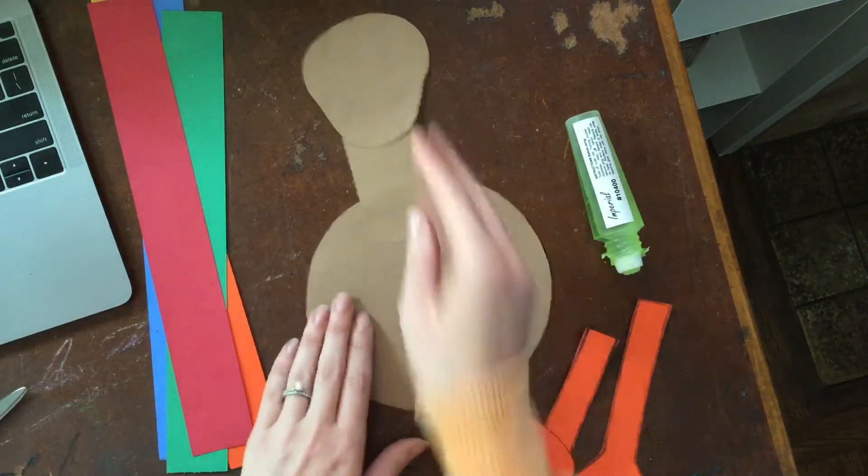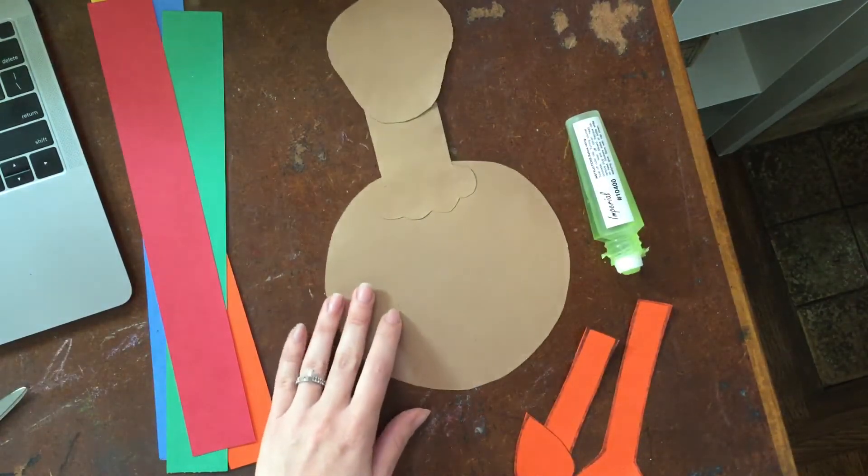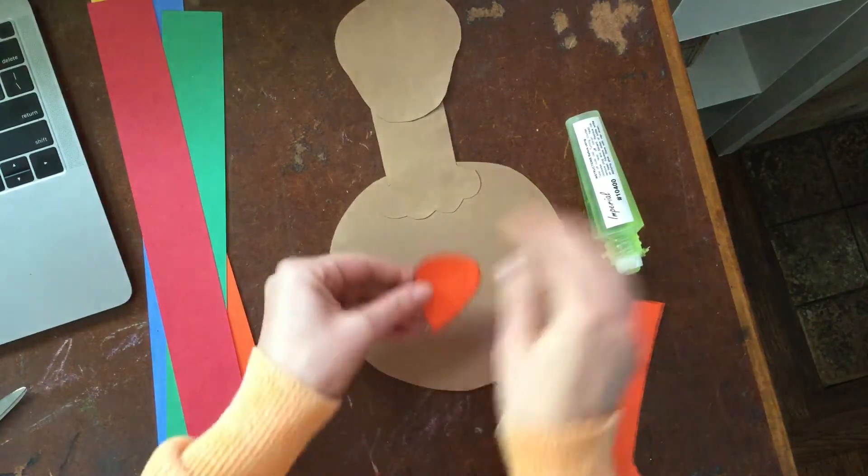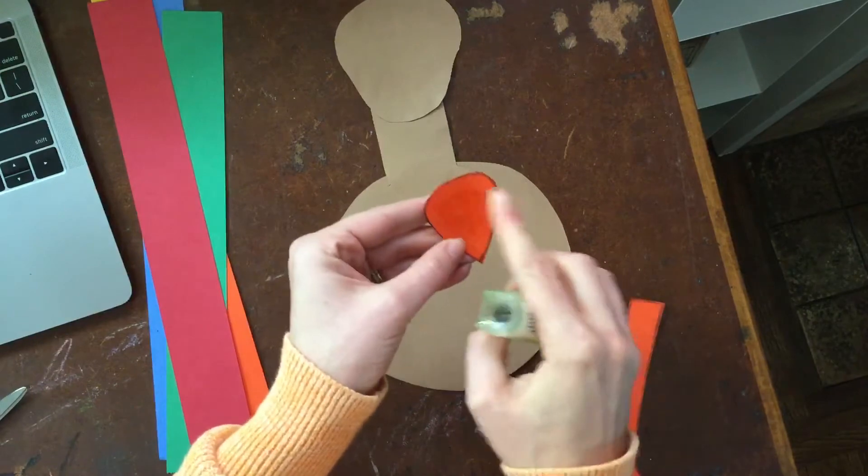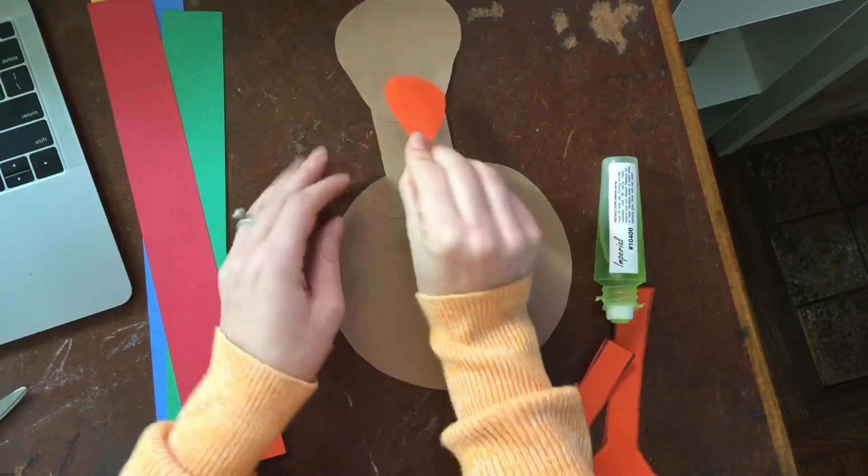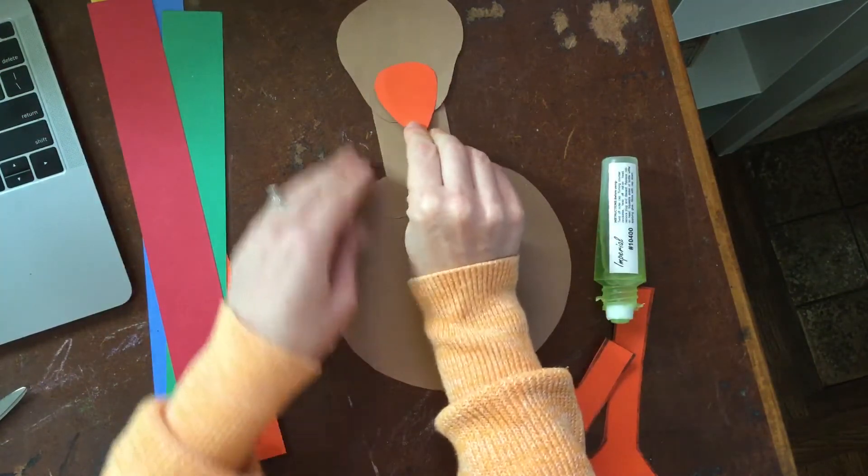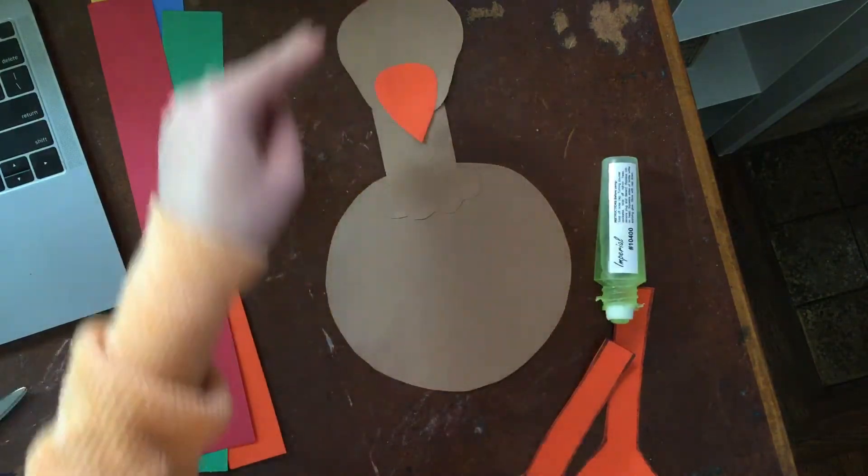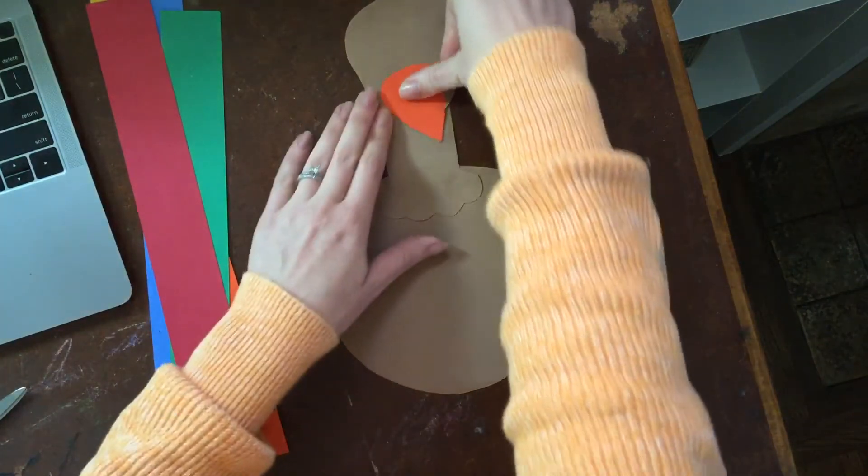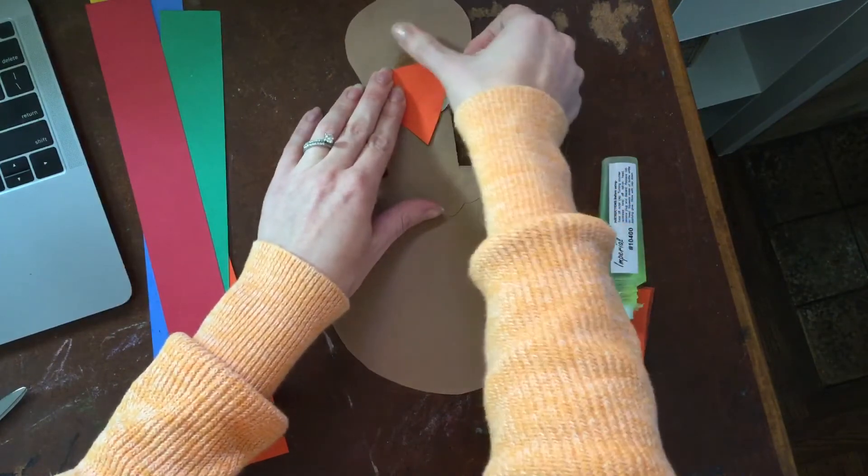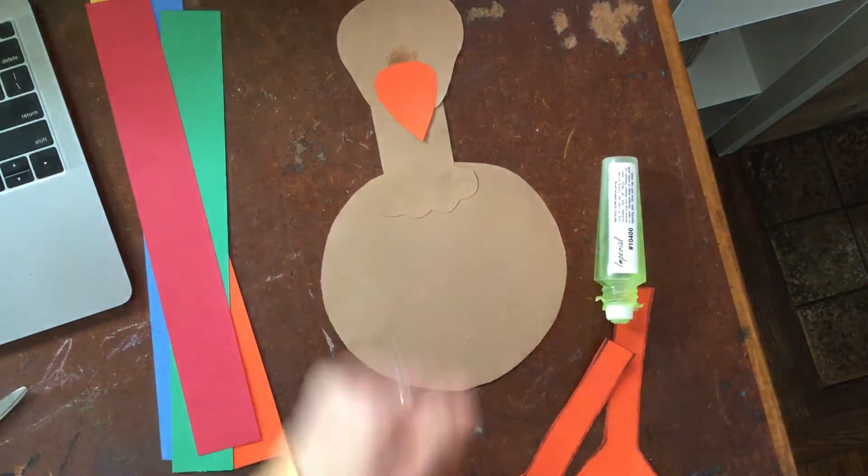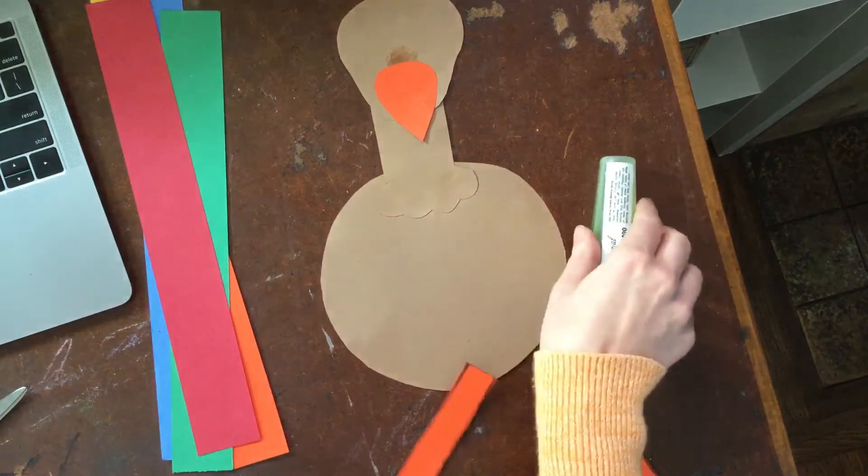So then I'm going to do the beak. So I'm going to put the glue on the side of the beak that has the black line. And the pointy side goes down. I mean you could even kind of have it pointing to the side I guess if you wanted. But I think the turkey is facing us so we'll do it like that.